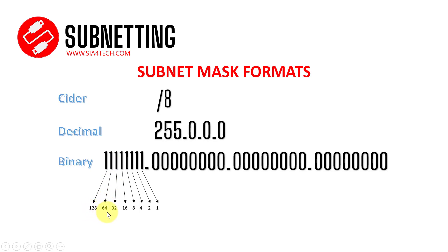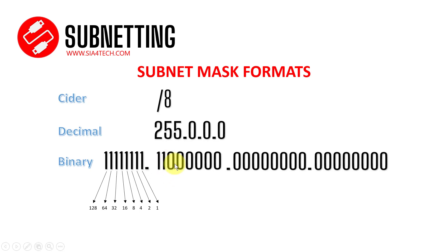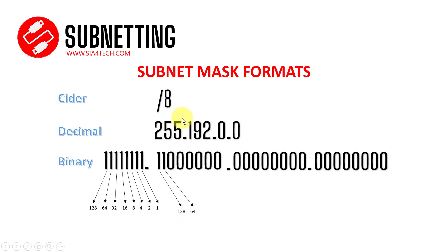We get 255 by calculating 128 plus 64 plus 32 and so on. For example, if only two bits are on, we calculate 128 plus 64, which equals 192. So the decimal would be 255.192.255 for the corresponding octets. The CIDR notation also changes accordingly — if eight plus two bits are on, the CIDR becomes /10.